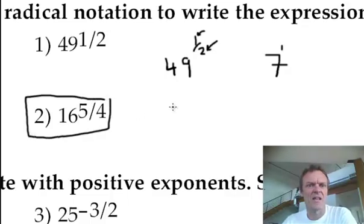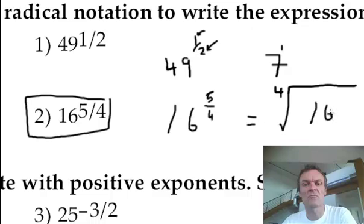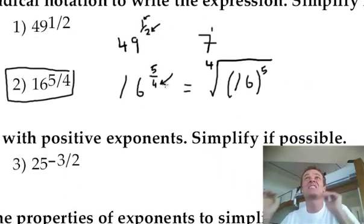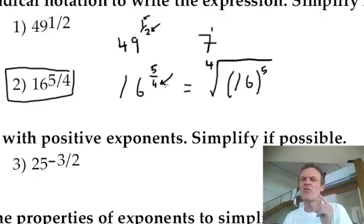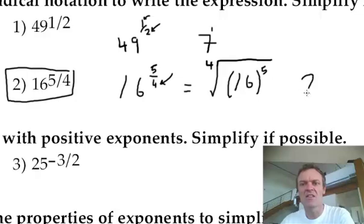How about 16 to the power 5 over 4? If I want to write it as a radical: remember, the 4 is the root — that's on the outside. The 16 is what I'm working on, and it will be raised to the power 5. Again, I'm going to 4th root of 16 first — I'd rather do that and make it smaller, because 16 to the power 5 is huge. What's the 4th root of 16? In other words, what times what times what times what — 4 of them — makes 16? It's 2. 2 times 2 times 2 times 2. The 4th root of 16 is 2.